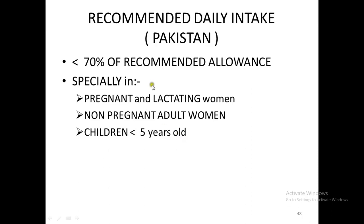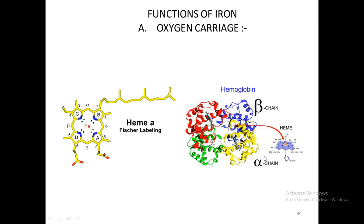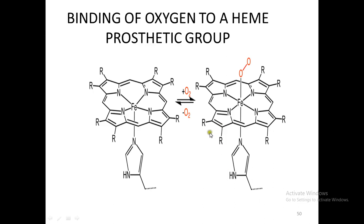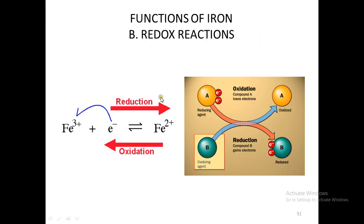The functions of iron: number one is the carriage of oxygen in the form of heme. This is a protoporphyrin ring with iron in the center. These porphyrin rings are found in the middle of all four globin chains of hemoglobin, with iron sitting in the center of each. Oxygen attaches to this iron, so the job of iron is to transport oxygen from the lungs to all tissues of the body.